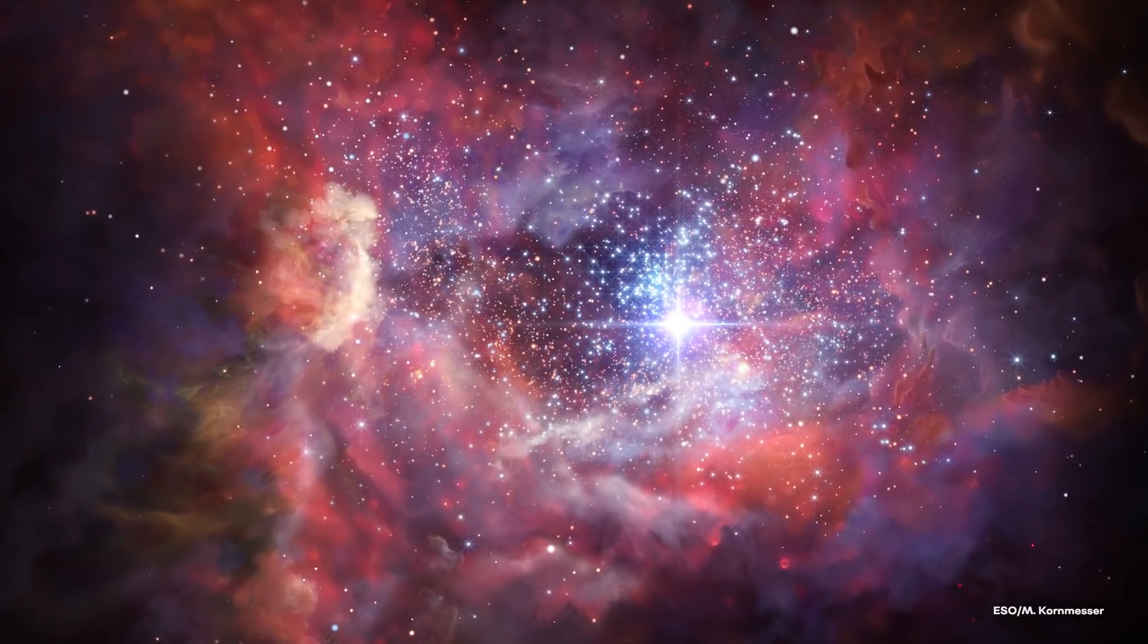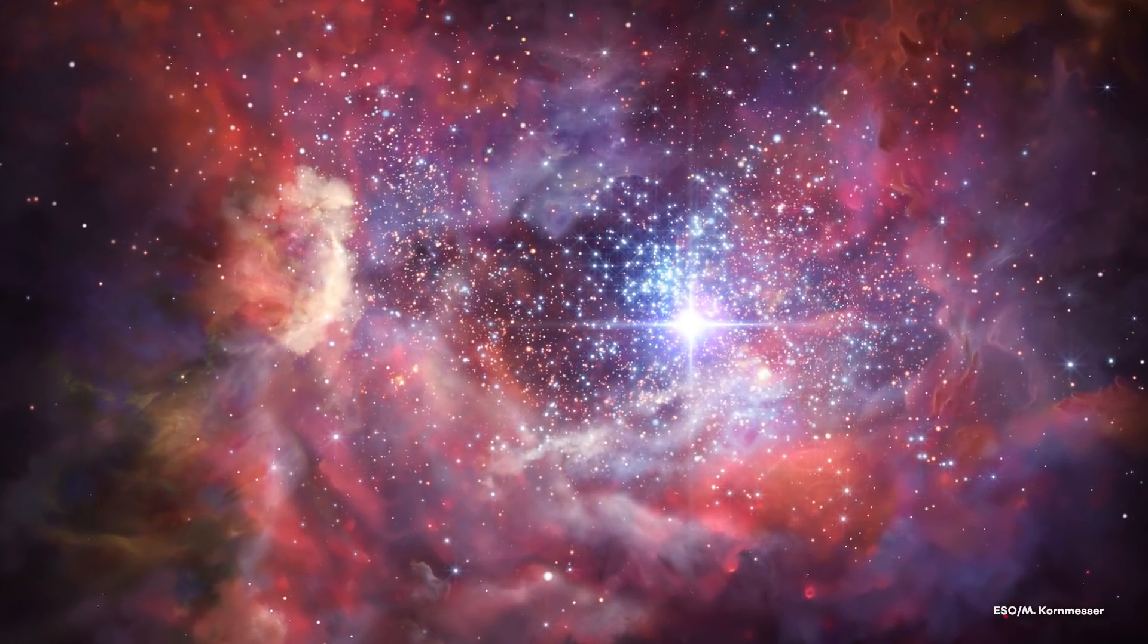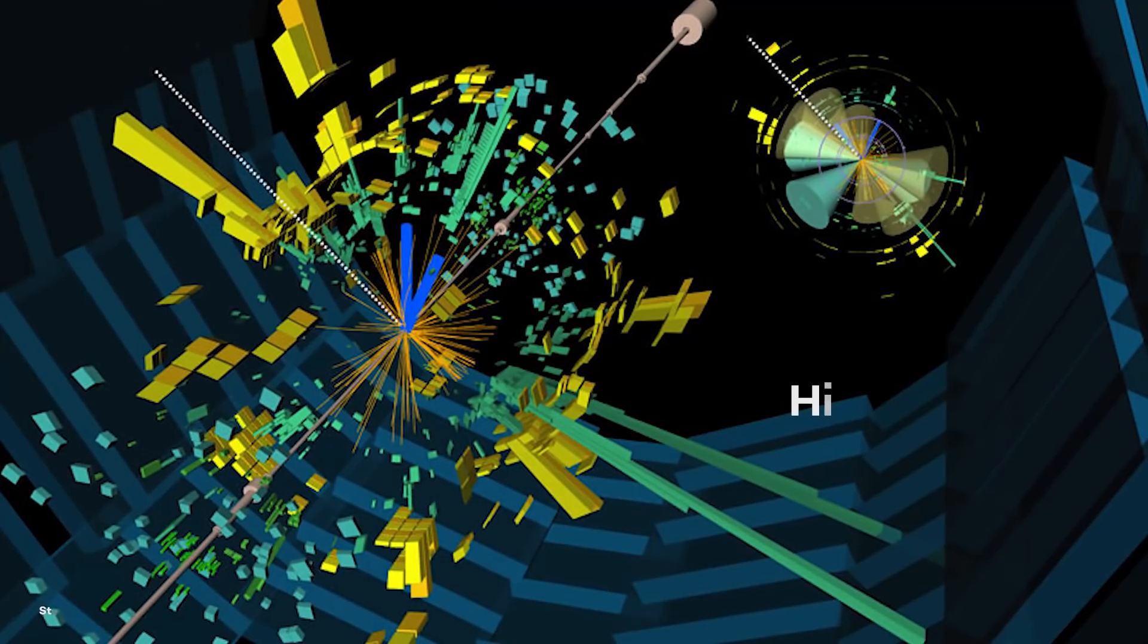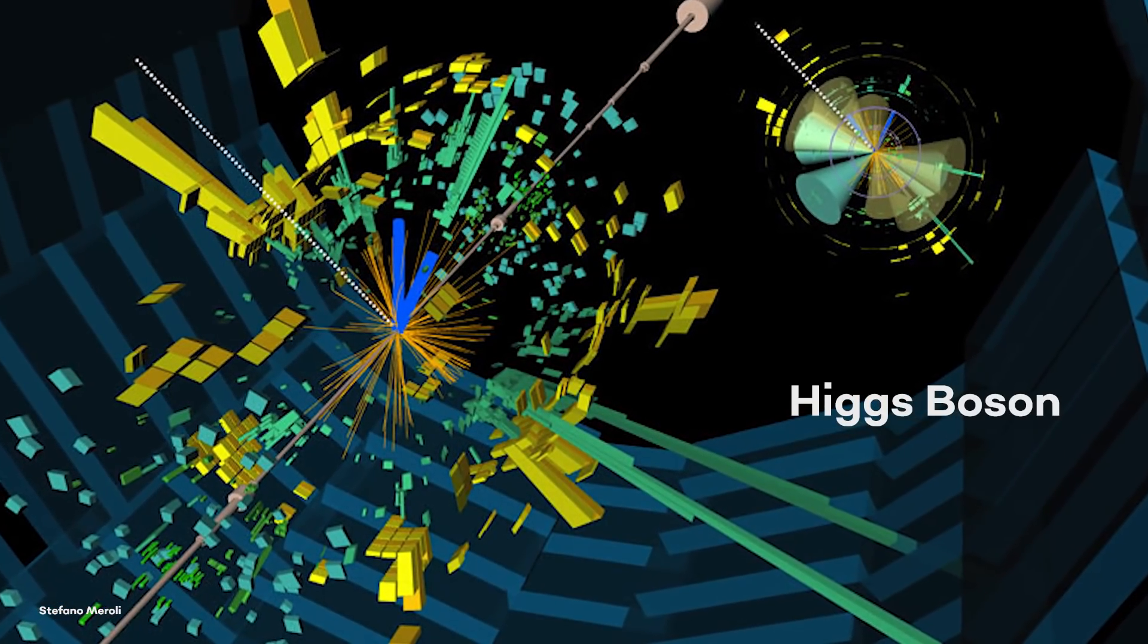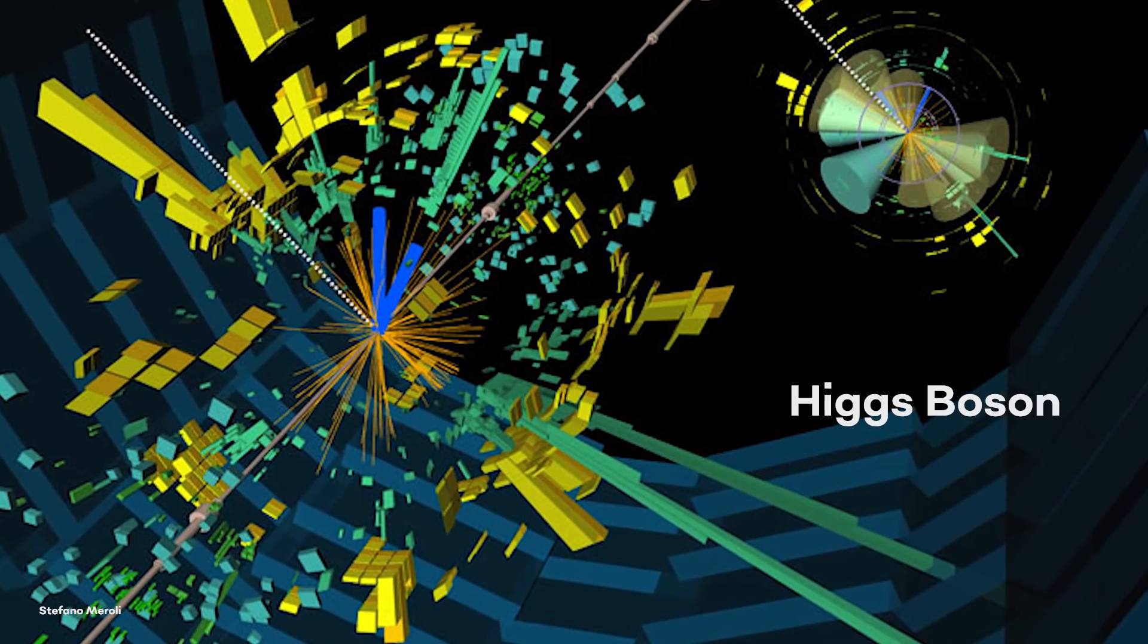In the early universe, for one moment, every particle was massless. Then suddenly, they weren't massless anymore. All because of Higgs boson. But how did this happen? How was Higgs boson able to give mass to the universe?